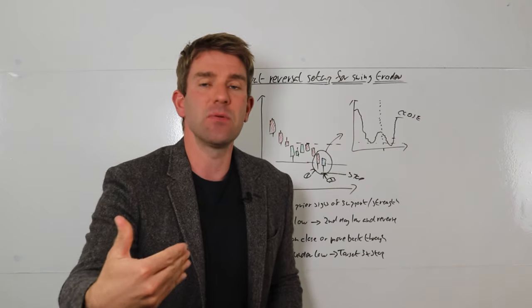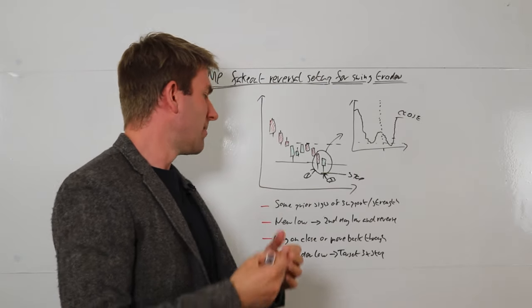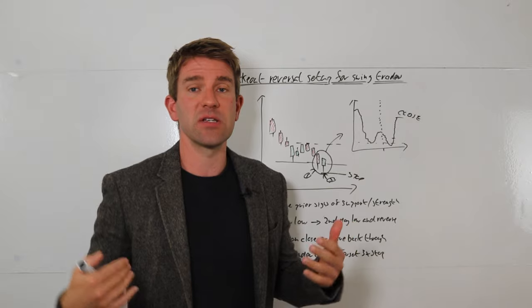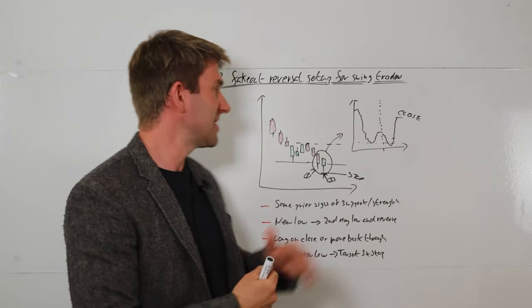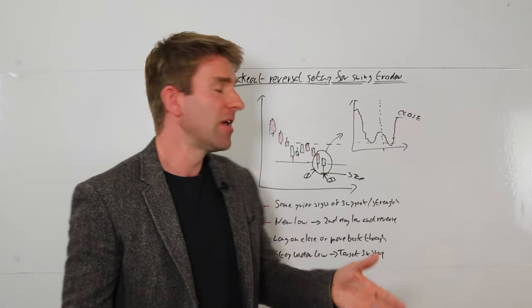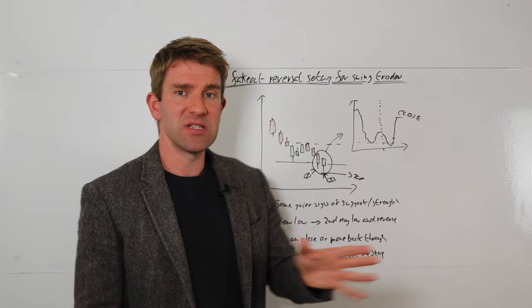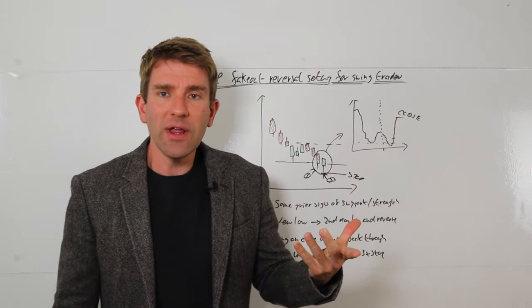The risk reward ratio, but you really want to look for three times that stop because the beauty of this trade is the stop is relatively tight. Because unless you've got a really crazy width to the downside, which you probably wouldn't take anyway, you're normally only going to penetrate it a very small amount in the morning often as well.